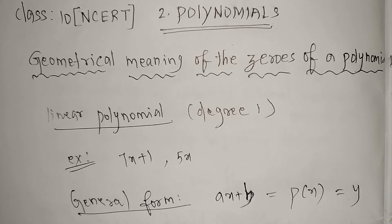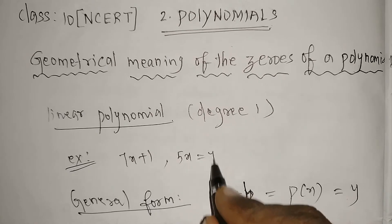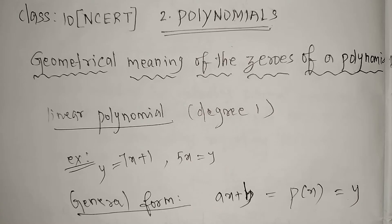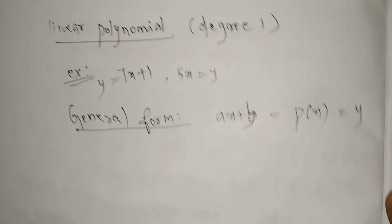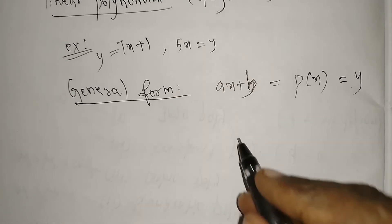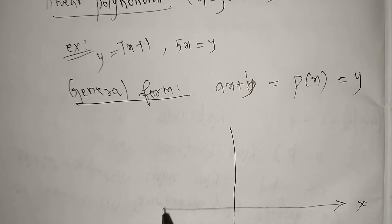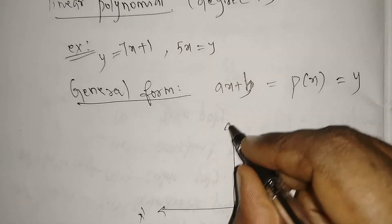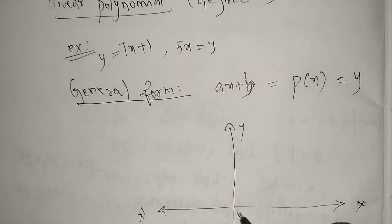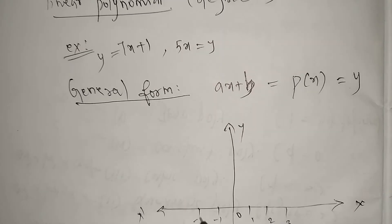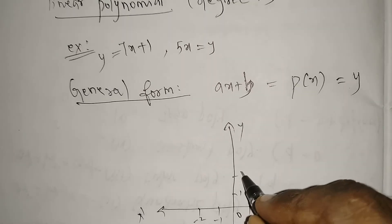We are taking p(x) as y. If we need to draw a graph, we need two variables, that is x and y, because we have two axes: x-axis and y-axis. So suppose we have a graph like this - this is my x-axis and this is my y-axis, with the origin here, going plus and minus on both sides.